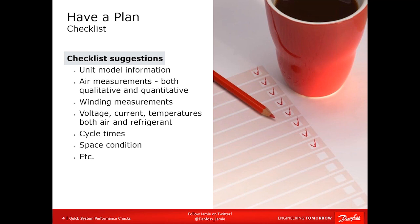The basics include error measurement — both qualitative and quantitative — winding measurements, voltage, currents, temperatures, cycle times, and the space condition. Cycle times and space condition are often linked together. Measuring pressures is probably further down the list. It can be done, but a lot of times you can tell what's going on without actually having to put your gauges on there.